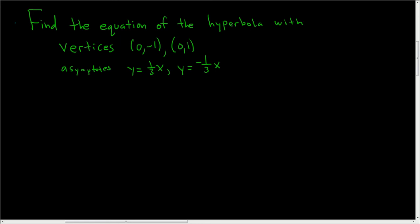We're being asked to find the equation of the hyperbola with the given vertices and the given asymptotes. Let's go ahead and do it. Solution.